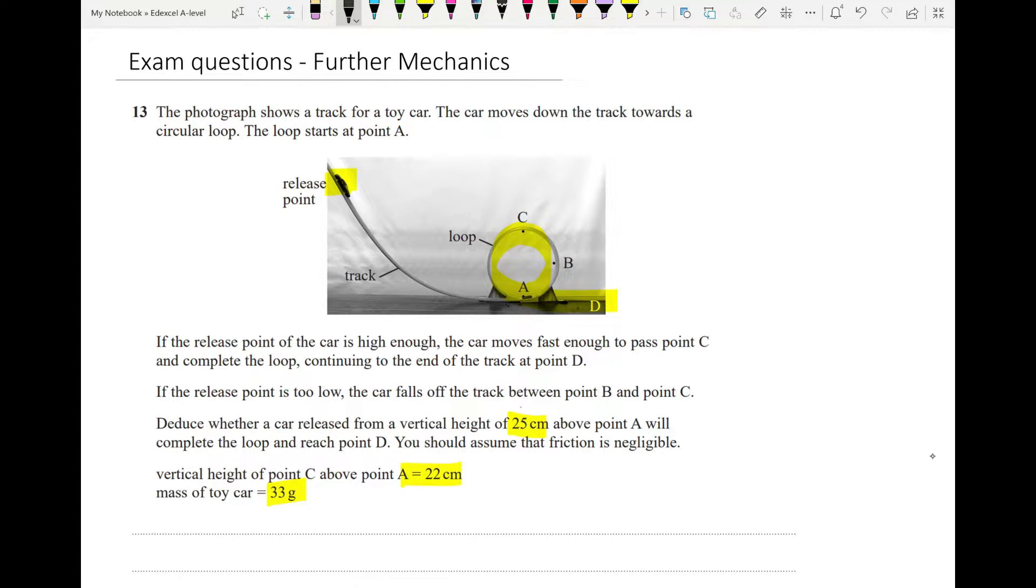We've got some information here on the mass of the car and how high C is above A. The first thing we're going to do is remind ourselves that these all have to be in our SI units, meters and kilograms. There's a minimum speed that a car has to have at C in order to stay on the track and not fall off. That minimum speed is the speed where the centripetal force required to keep it in the circle is equal to its weight. If it's going slower than that, it's going to fall off.